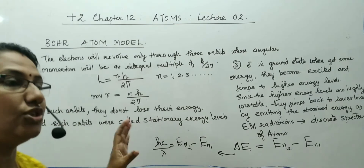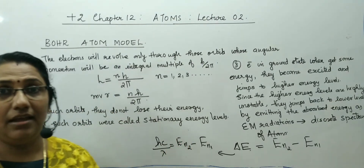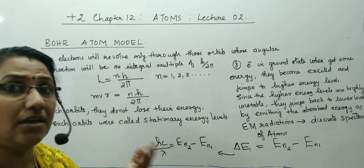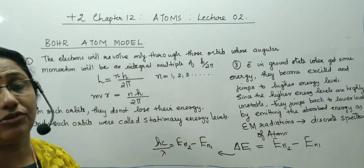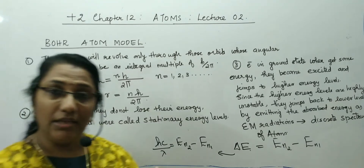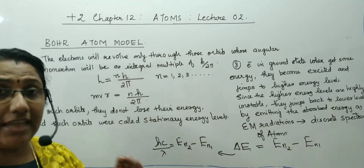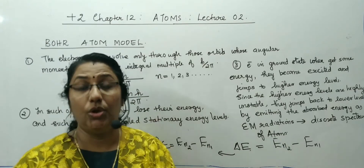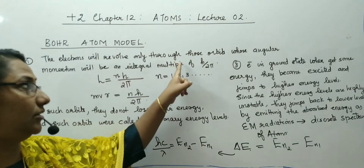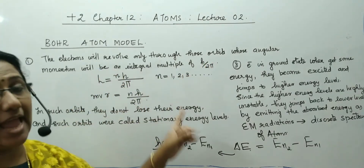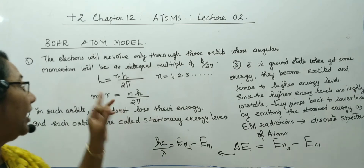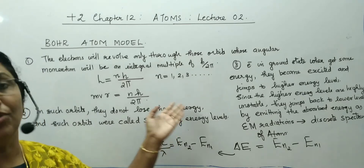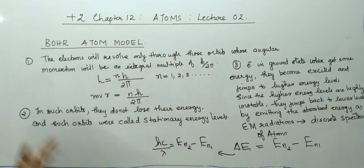Bohr had taken Rutherford's nuclear model of atom itself, but by studying it in detail, he understood that the necessary centripetal force, as Rutherford said, is provided by the electrostatic force. But it does not mean that the electrons can revolve through any path surrounding the nucleus. The electrons will revolve only through those orbits whose angular momentum will be an integral multiple of h by 2π. L = nh/2π, and L = mvR, so mvR = nh/2π, where n goes from 1, 2, 3 up to infinity.